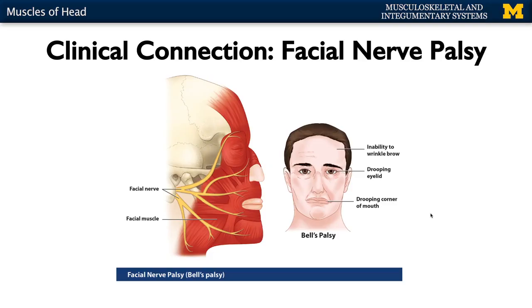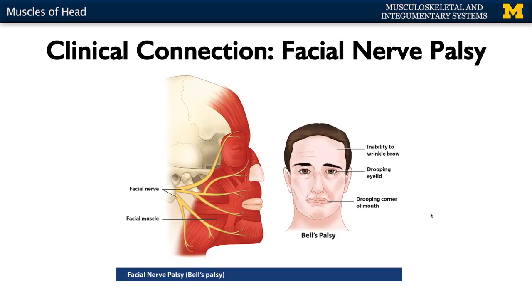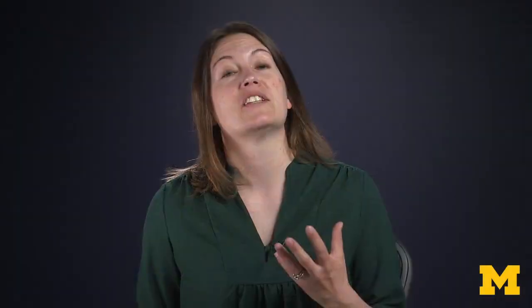Let's look at a clinical connection in terms of the facial nerve. It's very closely associated with the parotid gland and with the ear. If you have some type of inflammation — like an ear infection — that can cause inflammation and pinching on the facial nerve. If that happens, you can have what's referred to as facial nerve palsy, and a lot of times you hear this disorder referred to as Bell's palsy.